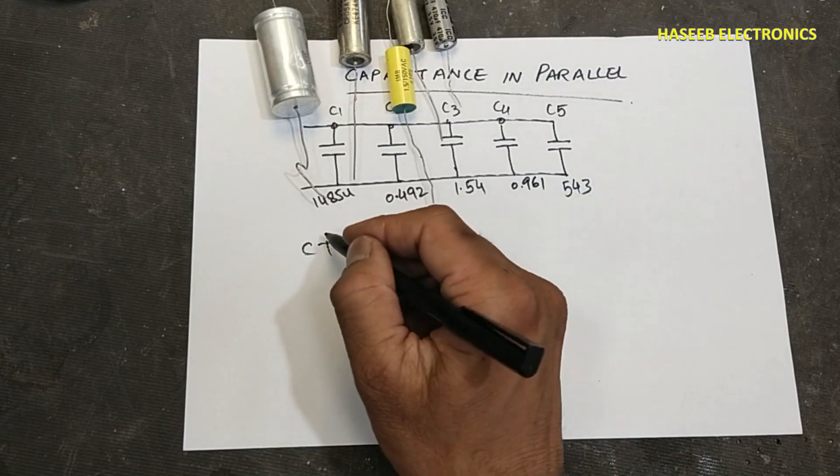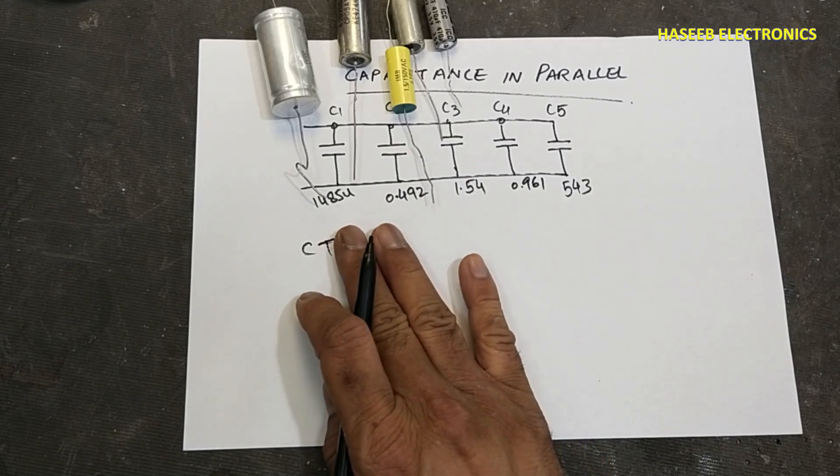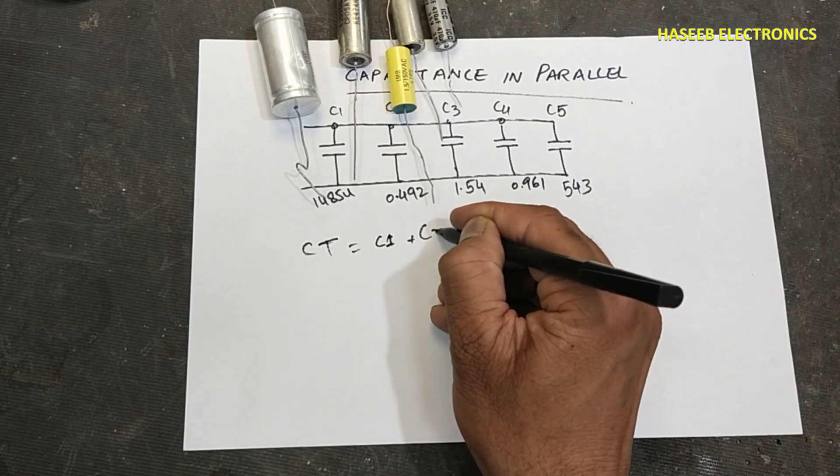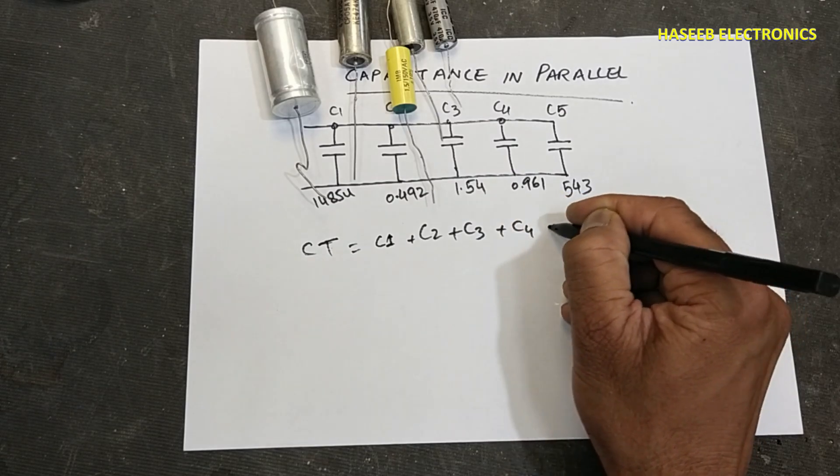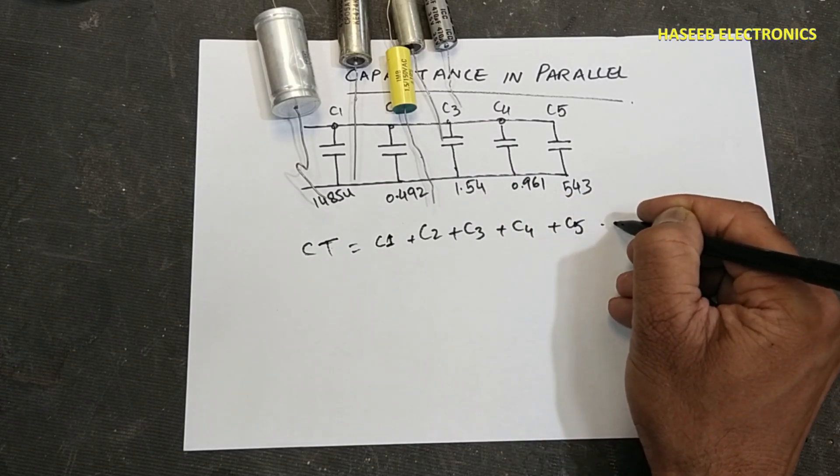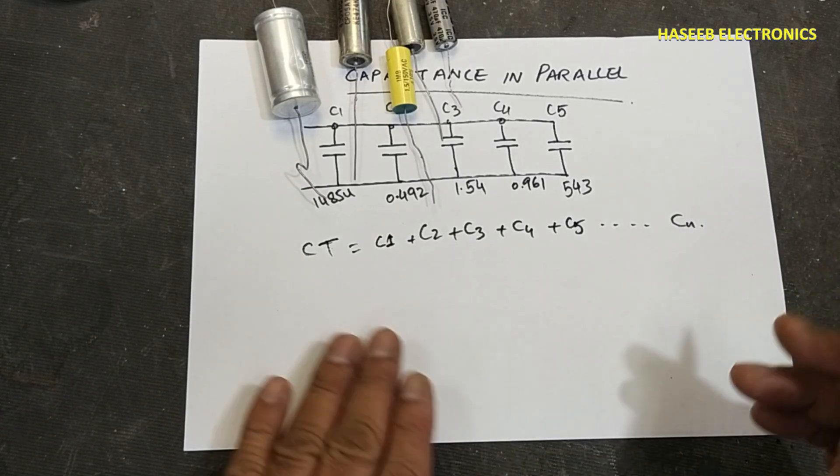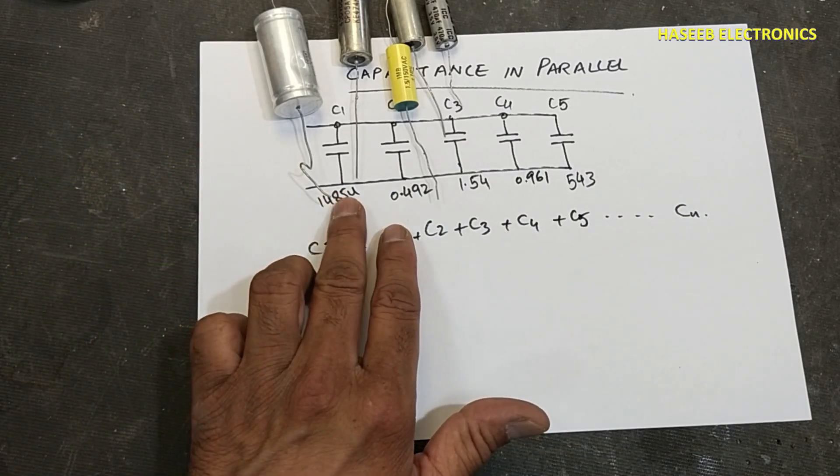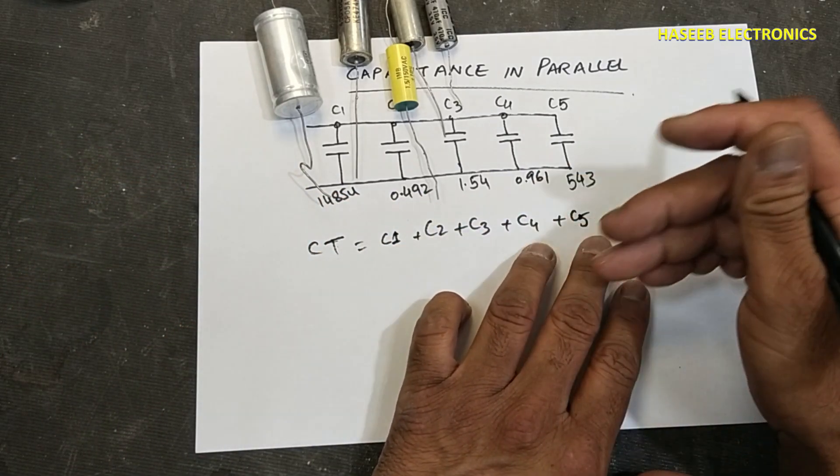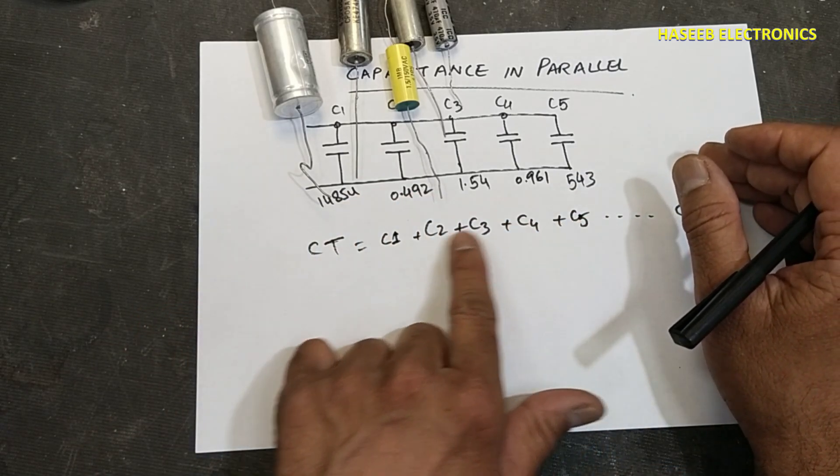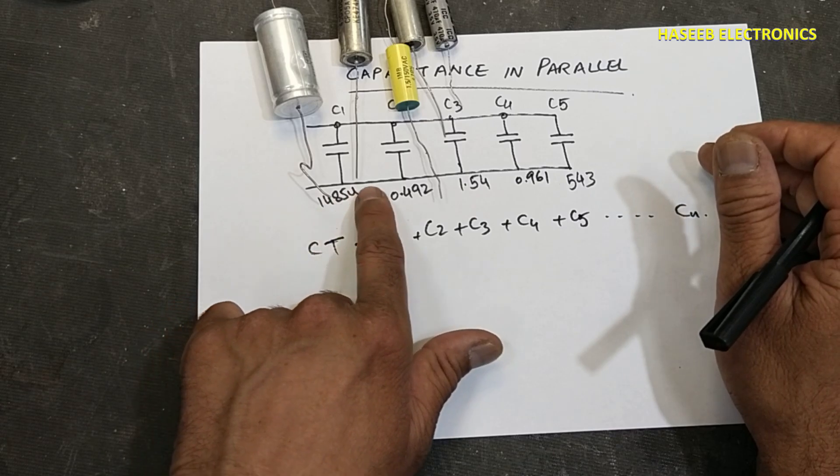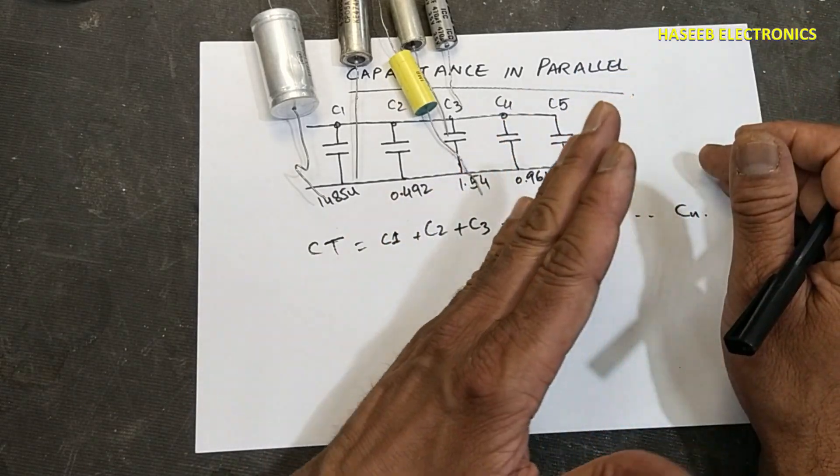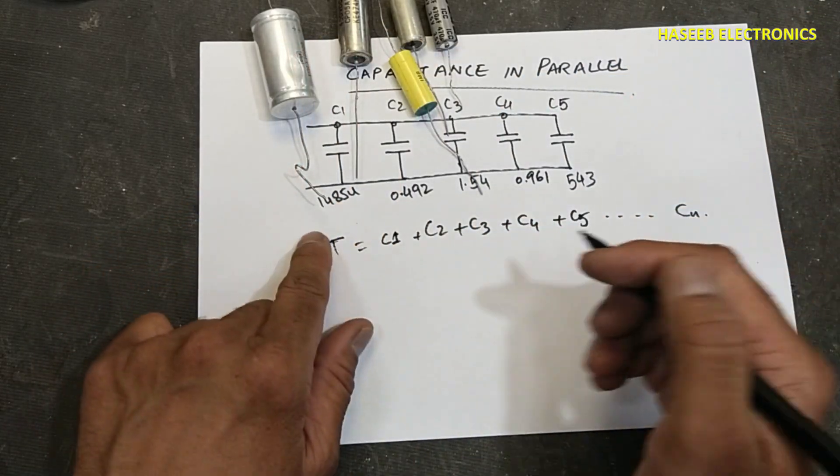CT in parallel: the capacitors will add. CT equals C1 plus C2 plus C3 plus C4 plus C5 for the number of capacitors. If we have the same value capacitors, just multiply the capacitor with the number of capacitors. For example, 1000 microfarad, we have four capacitors, 1000 multiply by four equals 4000 micro. But for different values we will calculate in this way.